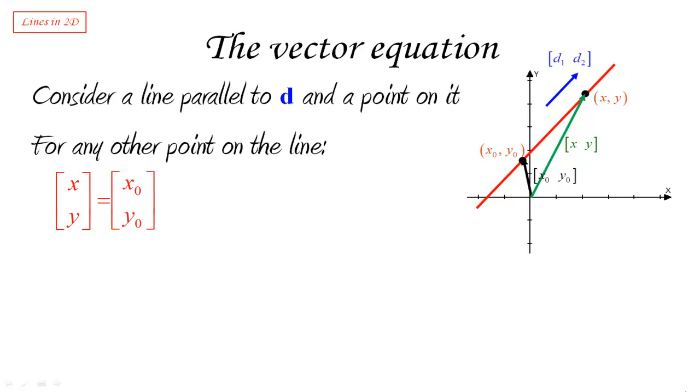So again, it's the vector whose representation starts at the origin and ends at the given point x0, y0. And then I'm going to add to it the vector that joins x0, y0 to x, y.